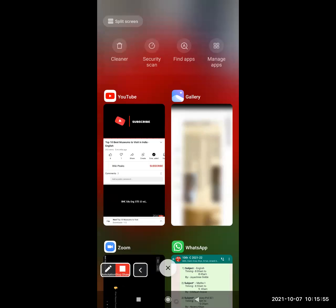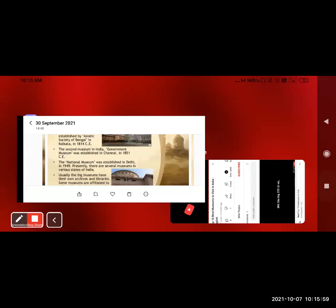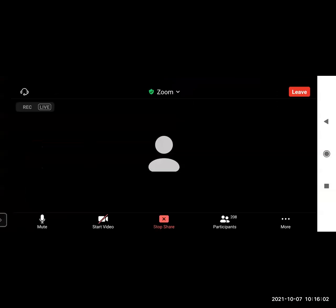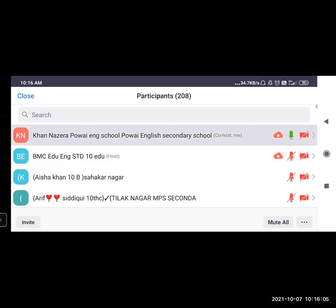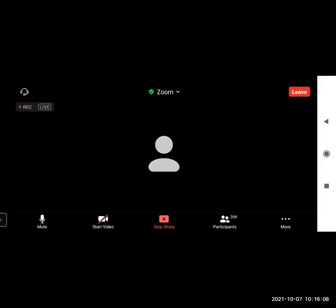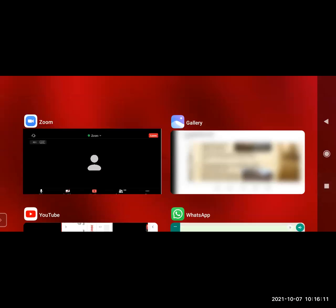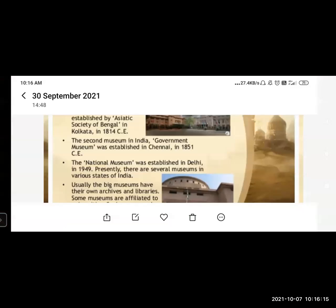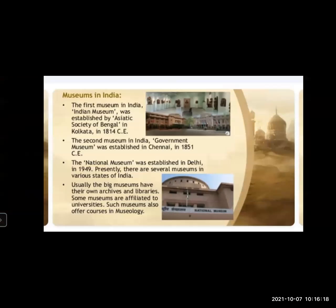We discussed the different museums in India. The first museum in India was the Indian Museum, established by the Asiatic Society of Bengal in Kolkata in 1814 — during the British period. The second museum is the Government Museum established in Chennai in 1851. The reason to show these museum videos is that museum is a very interesting topic; I cannot just read lines and explain it.